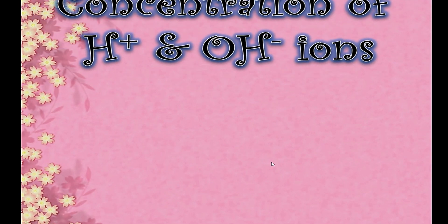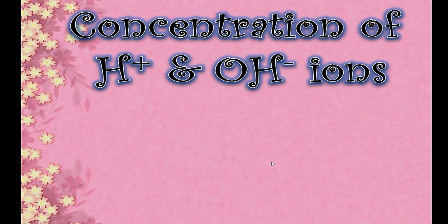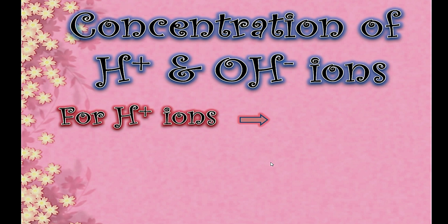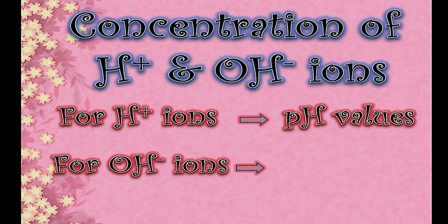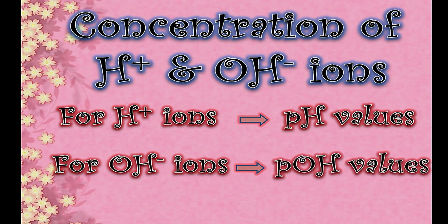You can easily calculate the concentration of hydrogen or hydroxide ions using pH and pOH values. Hydrogen ion concentration is calculated from pH, and hydroxide ion concentration is calculated from pOH. In summary, hydrogen ion is related to pH, and hydroxide ion is related to pOH.